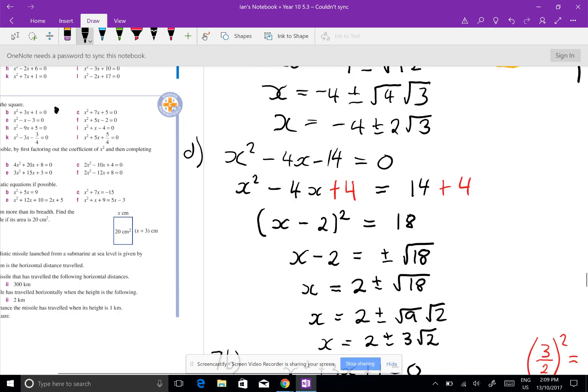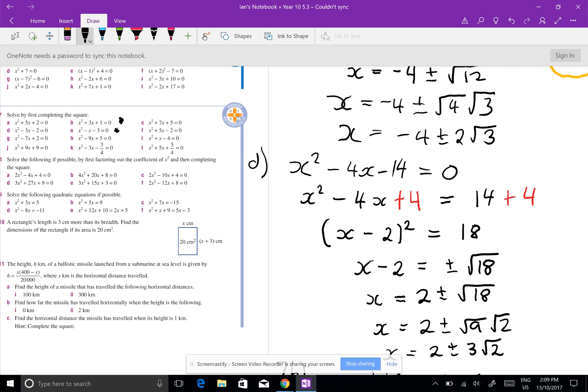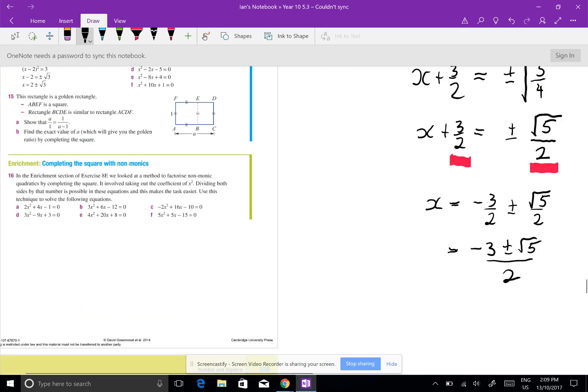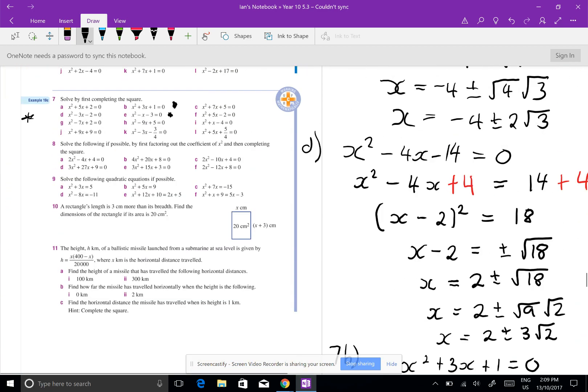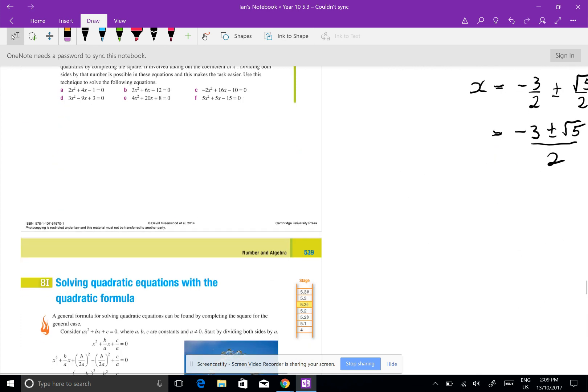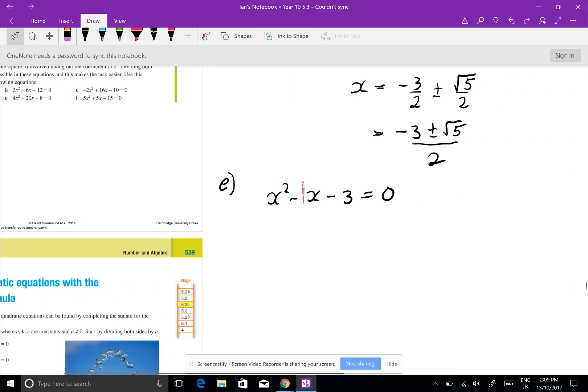I want to do this one here: x squared minus x minus 3. So that was question 7e. x squared minus x minus 3 equals 0. Straight away you need to know that there is a 1 there. So here we go, x squared minus x equals, add the 3.